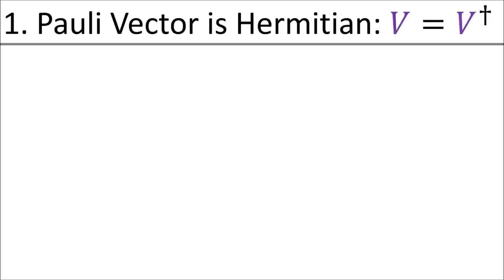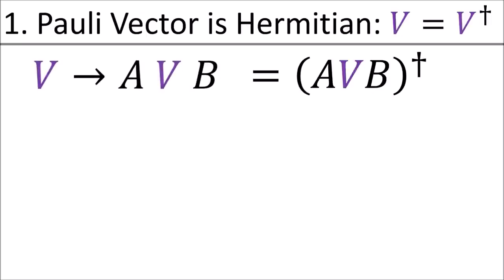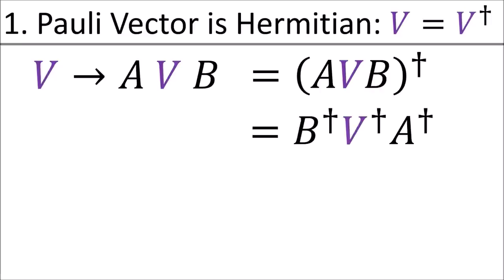Notice that when we take the determinant of our polyvector, we get z times negative z minus this times this. Simplifying, this becomes negative x² minus y². So the determinant of our polyvector is the negative of the vector's squared length. So when we rotate our polyvector, its determinant—which is the vector's negative squared length—should not change. Using these three properties, we can deduce the form of the A and B matrices.